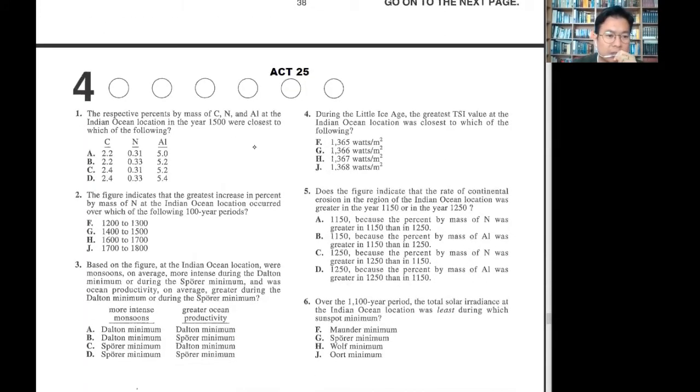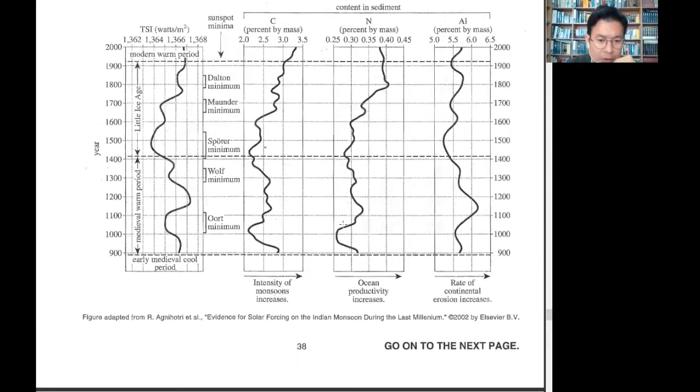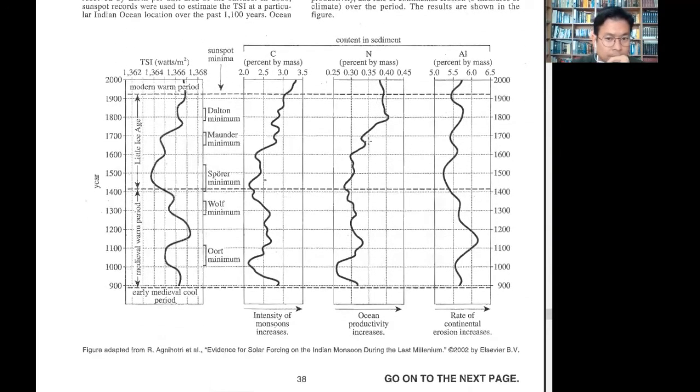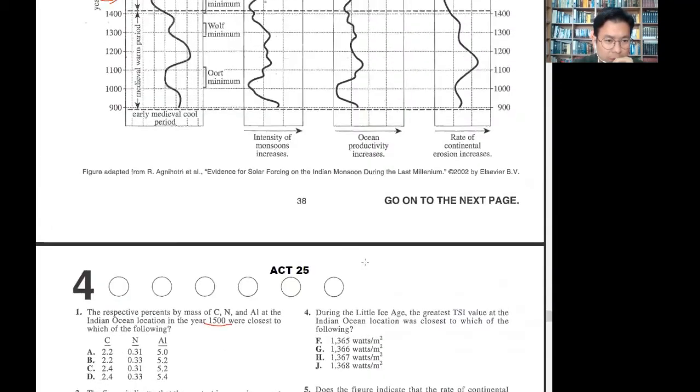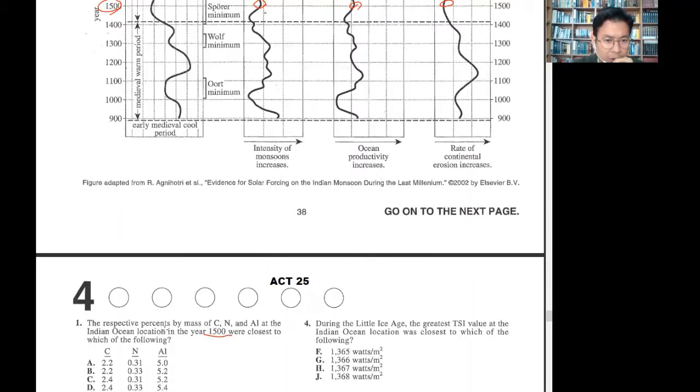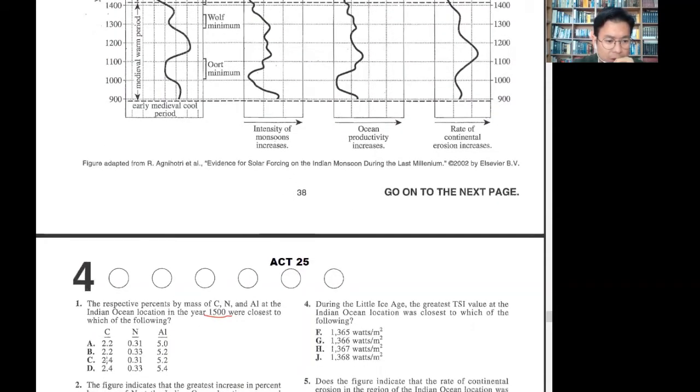Number one, respective percent by C/N, Indian Ocean location. We have to look around and find the year is 1000. C is around 2.34, so 2.4 is fine and 0.31. Let's see.